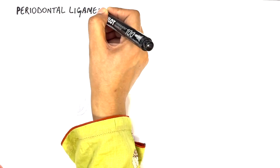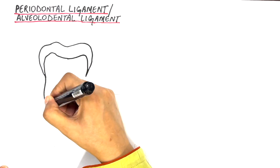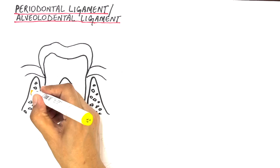The periodontal ligament or PDL, also known as the alveolodental ligament, is a fibrous joint that suspends the root of each tooth in its bony socket.